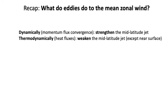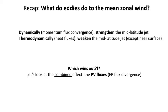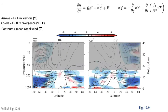So let's recap what the eddies do to the mean zonal wind. Dynamically, through the PV fluxes, there is a momentum flux convergence strengthening the mid-latitude jet. Thermodynamically through the heat fluxes, this actually acts to weaken the mid-latitude jet except near the surface. To see which wins out, we can look at the combined effect through the EP flux divergence, which we'll now examine in the real atmosphere.